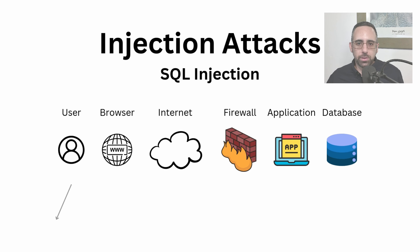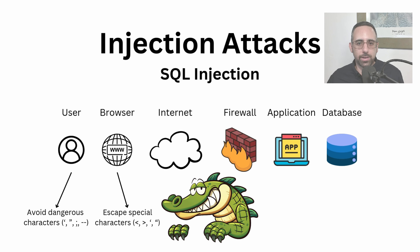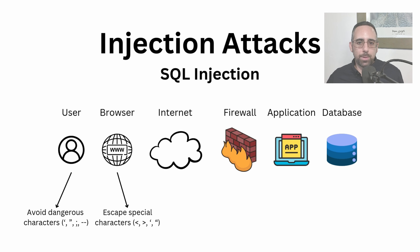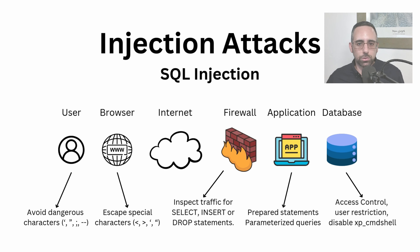On the user side, it would be things like avoiding dangerous characters like quotes, double quotes, or semi-colons or double dashes. On the browser level, we could use JavaScript to escape special characters like angle brackets and quotes. On the web application firewall, you could set some packet inspection policy for suspicious patterns or keywords like SELECT, INSERT, DROP, or any SQL-related statement. On the application side, it's very important that developers use parameterized queries or prepared statements to separate SQL logic from user input and ensure input is treated as data, not as executable code. On the database level, it's important to implement good access control to restrict user permissions or disable features like XP_CMDSHELL, which grants remote attackers direct access to the operating system shell via SQL.